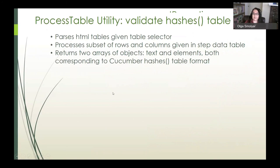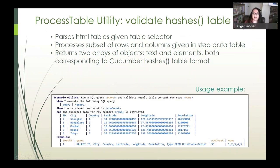The process table utility is used to validate data provided in cucumber step data tables and it can parse an HTML table given only the table selector. It processes a given subset of rows and columns and returns two arrays of objects, text and elements from the table, both corresponding exactly to cucumber's hashes input table format. What this allows us to do is to define a validation step and indicate the portion of the table, the columns and rows that we want to validate, and then use process table to compare the actual table contents to the expected subset. Process table also accepts faux selectors to accommodate non-standard table structure.